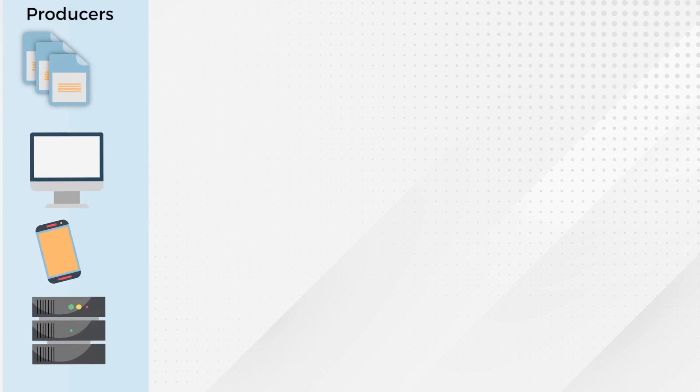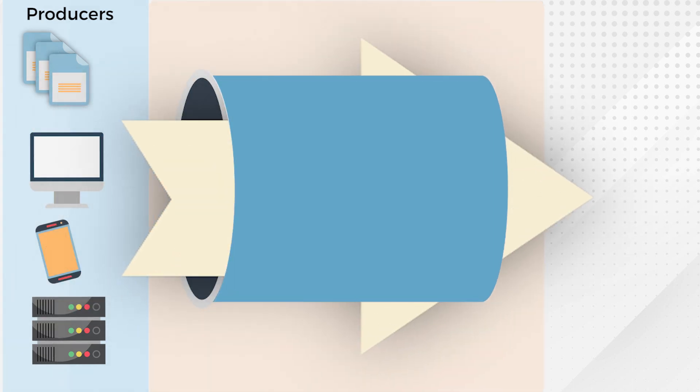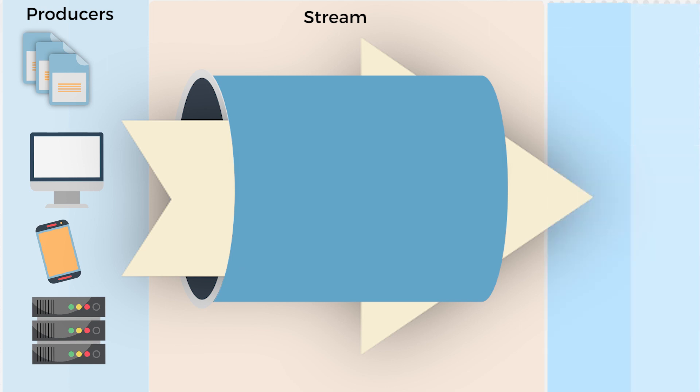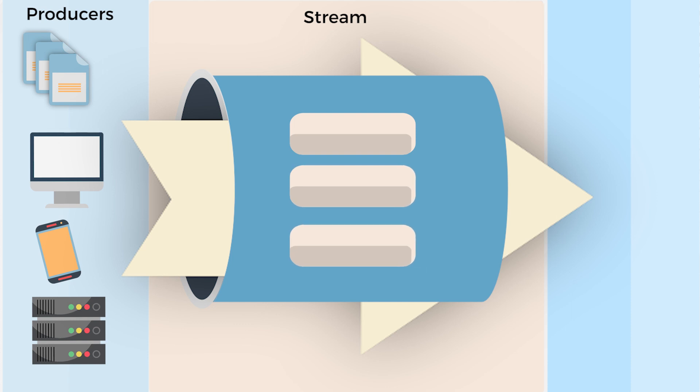So how does this work? Data streaming is focused on capturing events, and at a high level it will typically look something like this. First, you have your source applications, or what could be called data producers. This might be a database, a software application, or anything else really that's creating data for you. These producers are set up to send their event information to the stream, where it gets written to a log file and placed in a queue. Rather than there being just one single queue to manage all events from every producer, it can be broken down into groups and subsections to allow for faster parallel processing of these events as they come through.